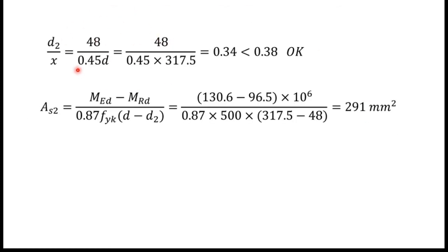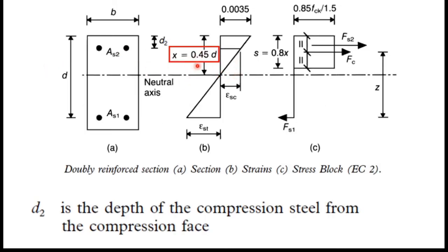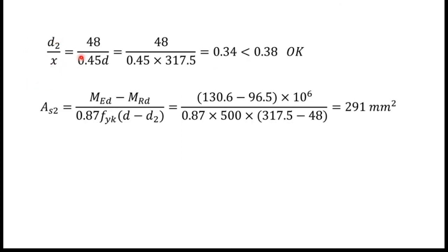There is a check: d2/x should be less than 0.38. Here x = 0.45·d, so d2/x = 48 / (0.45 × 317.5). Simplifying gives 0.34, which is less than 0.38, so the check is satisfied. This is just a verification step and will not be used in further calculations.